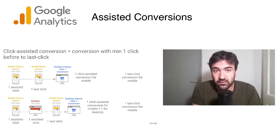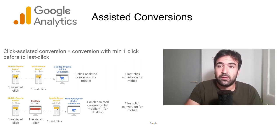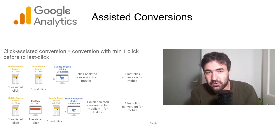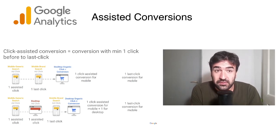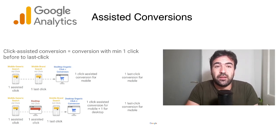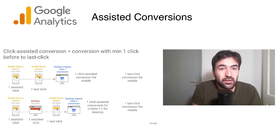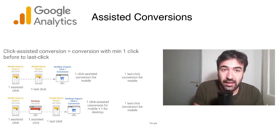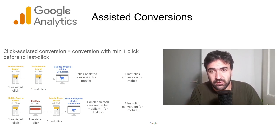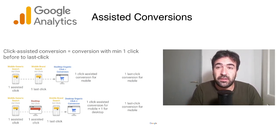Eventually, on the desktop example below, we have one more device that plays a role both as an assisted conversion and also generating the real conversion, which is the desktop. Here the journey starts with a mobile ad click once again, but the person decided to do research first on the desktop, then came back via a mobile ad click, and eventually finalized the purchase or lead gen on the desktop again.